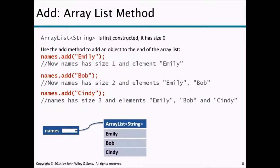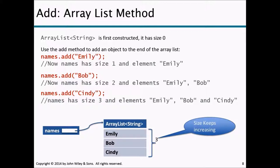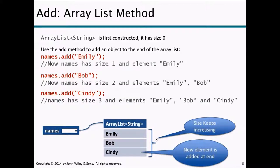Looking at our names ArrayList: Emily is at index 0, Bob at index 1, Cindy at index 2. The size of our ArrayList is three, the size keeps increasing, and each new element is always added at the end.